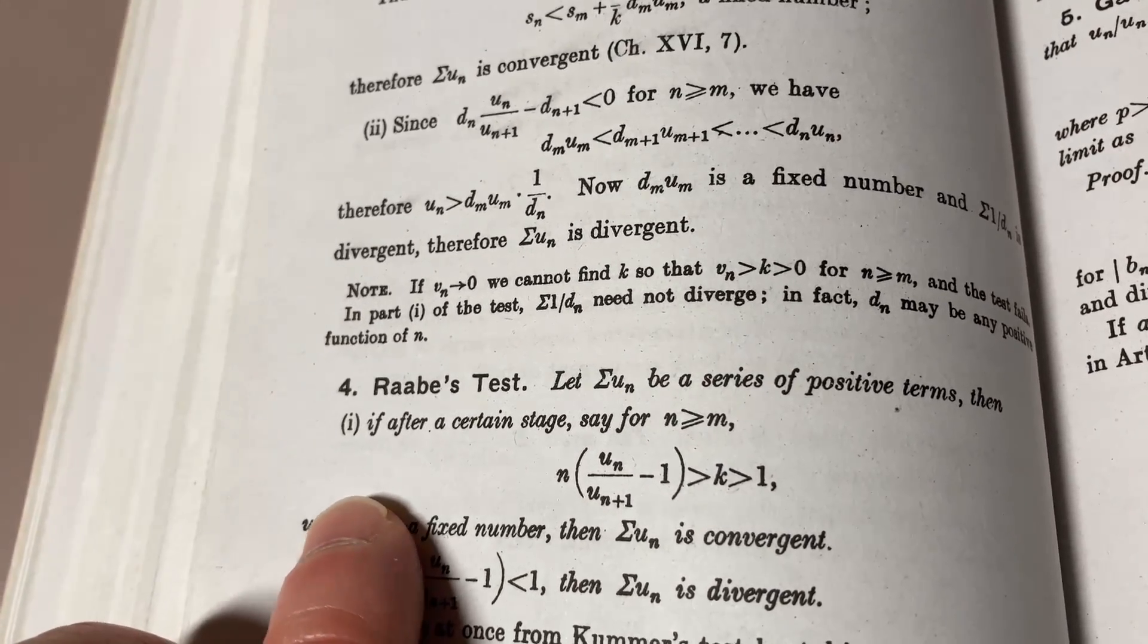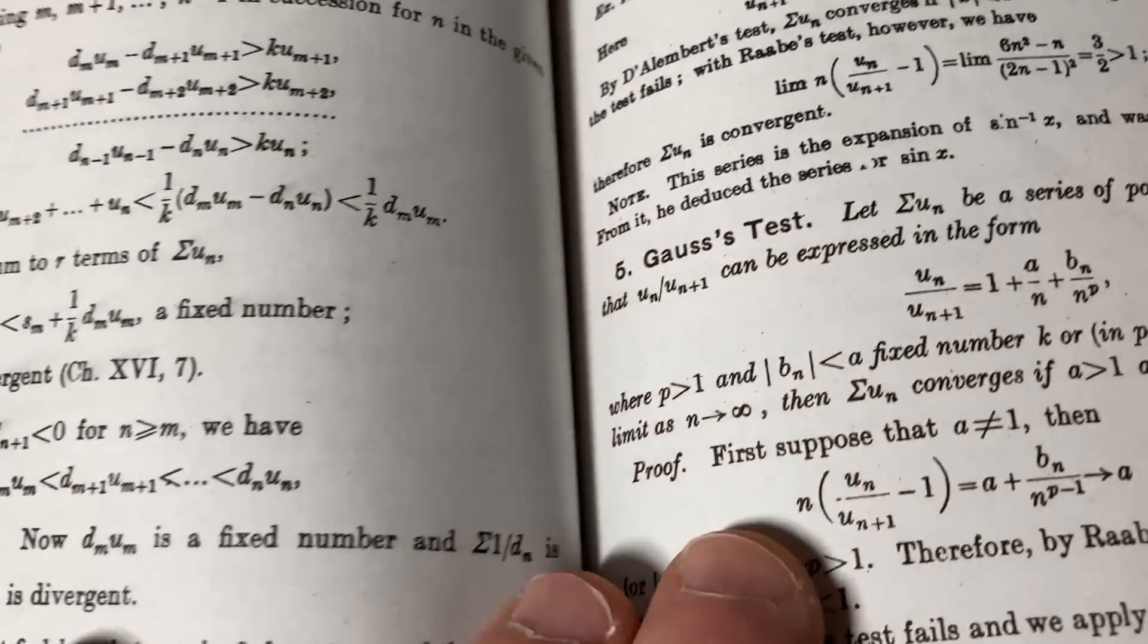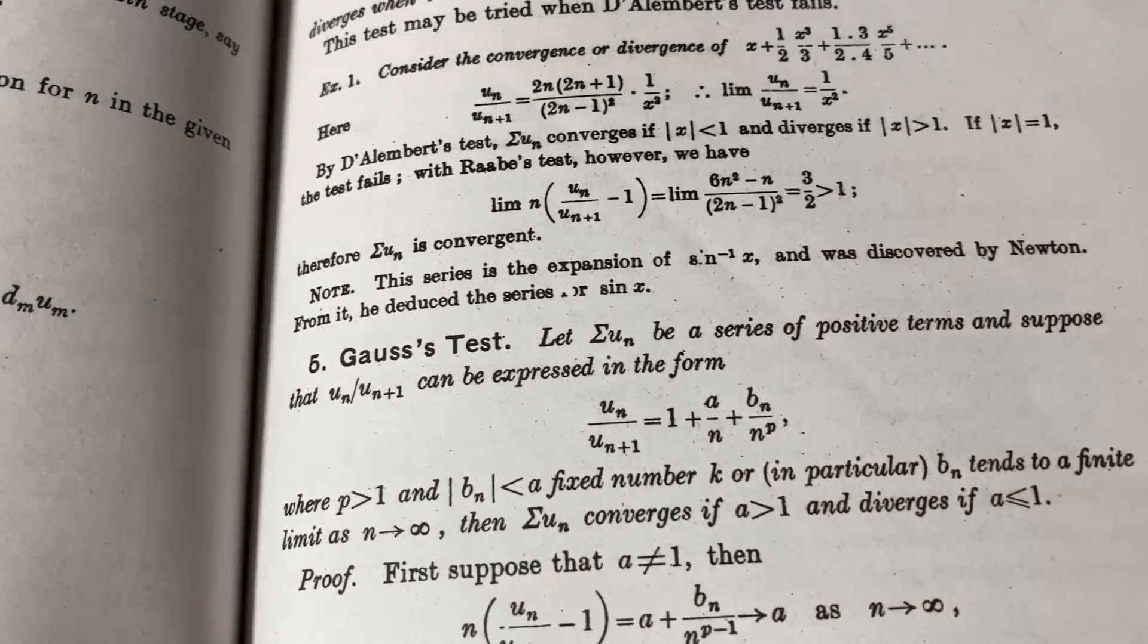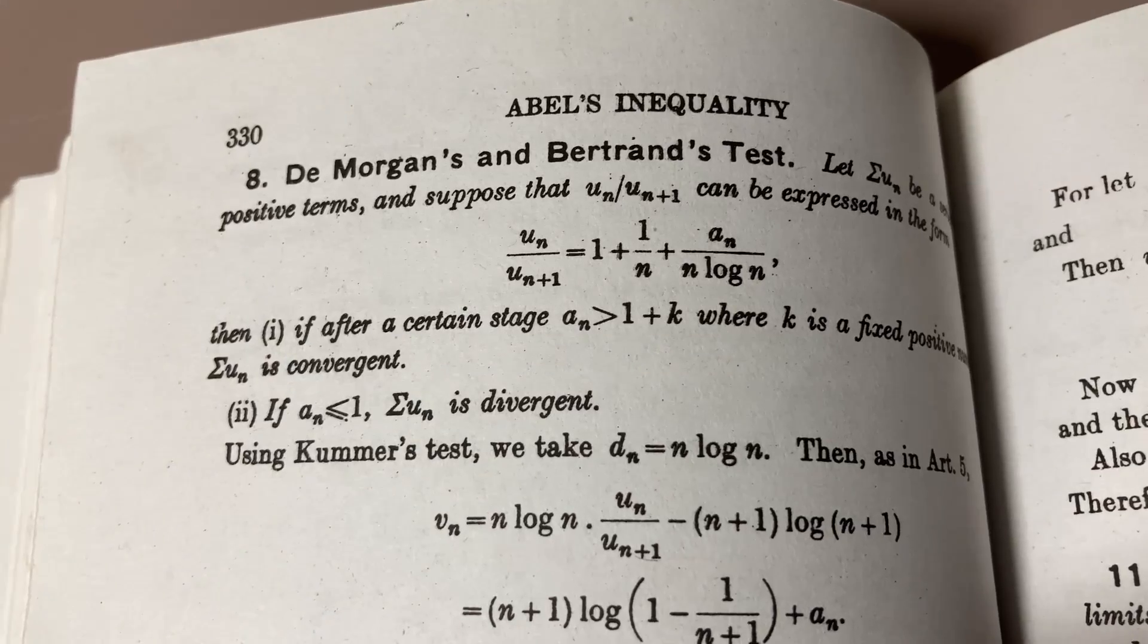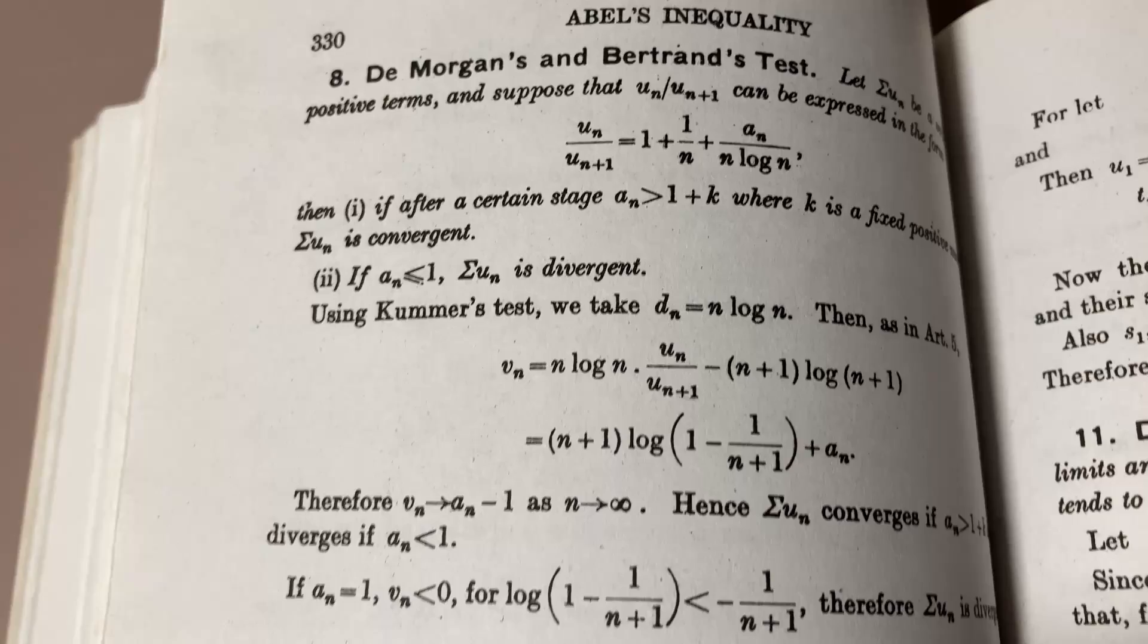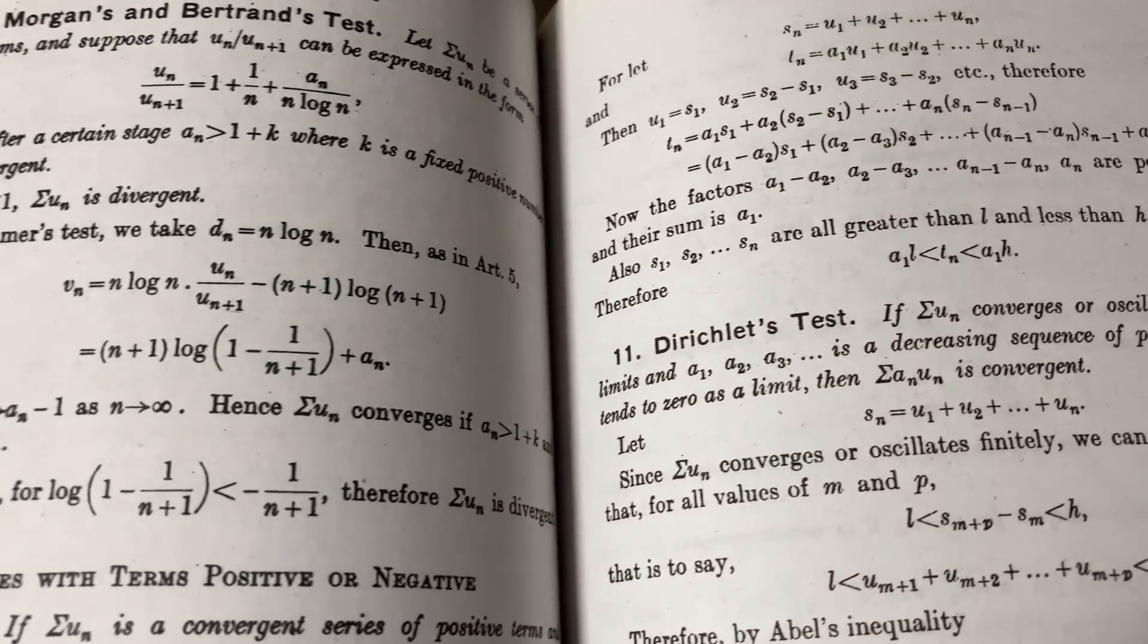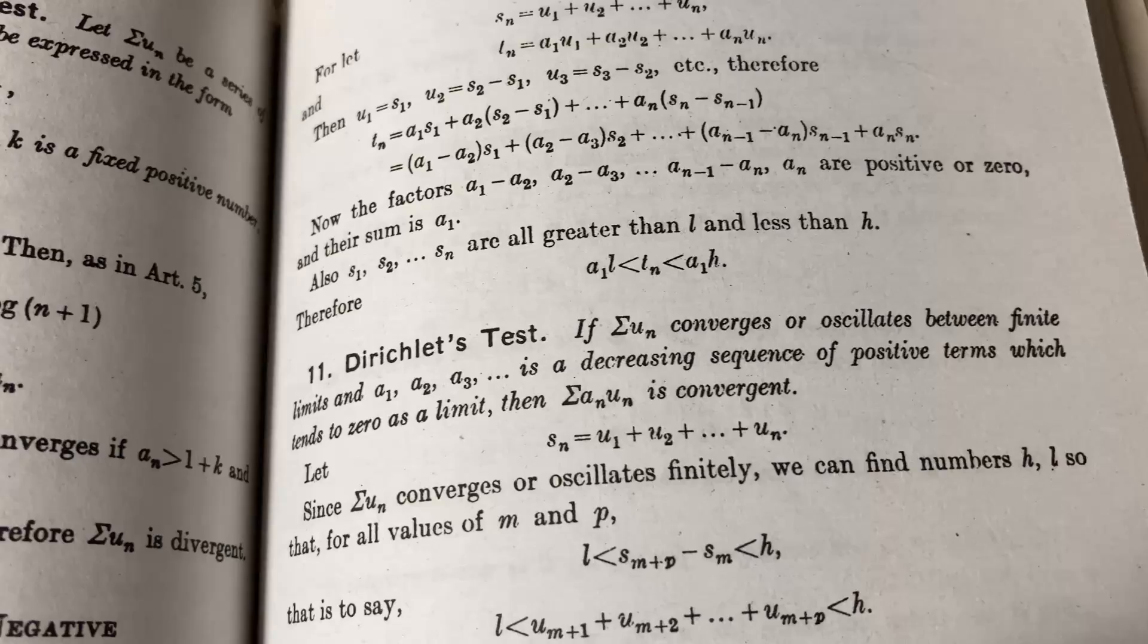And here we have Rob's Test. I've seen this in advanced calculus books, actually, so that's quite interesting that it's in this book. And Goss's Test. Here they talk about DeMorgan's and Bertrand's Tests. So all kinds of series convergence tests that you don't normally see in a Calculus 2 course. And here we have Dirichlet's Test.